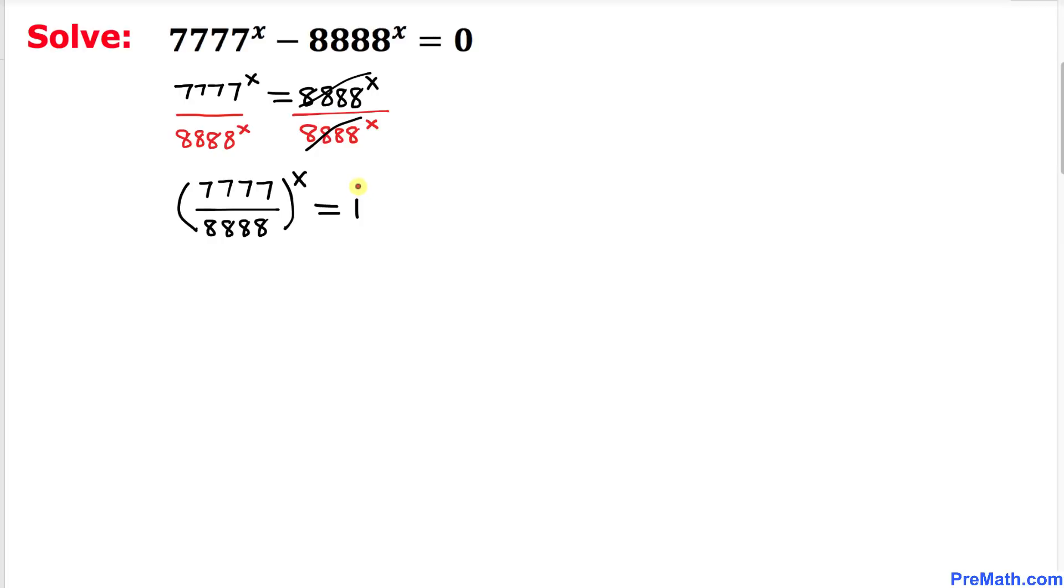Now let's focus on the right hand side, this number 1. We can write 1 equals to n power 0, where n is some number and n must not be equal to 0.